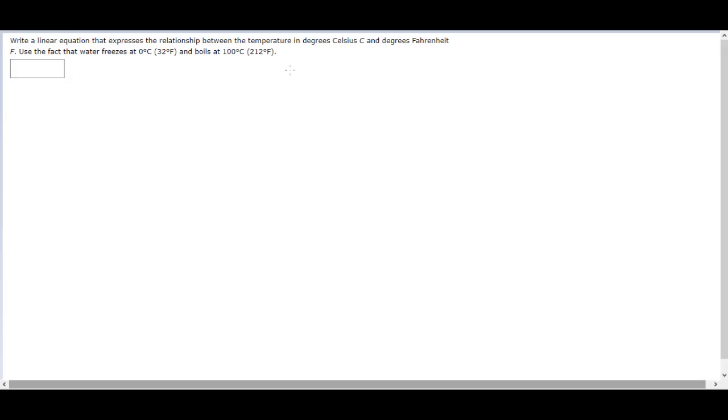Okay, so to begin this question, let's look here. They want us to write a linear equation that expresses the relationship between temperature in degrees Celsius and Fahrenheit. Use the fact that water freezes at 0°C, which is 32°F, and boils at 100°C, which is 212°F.